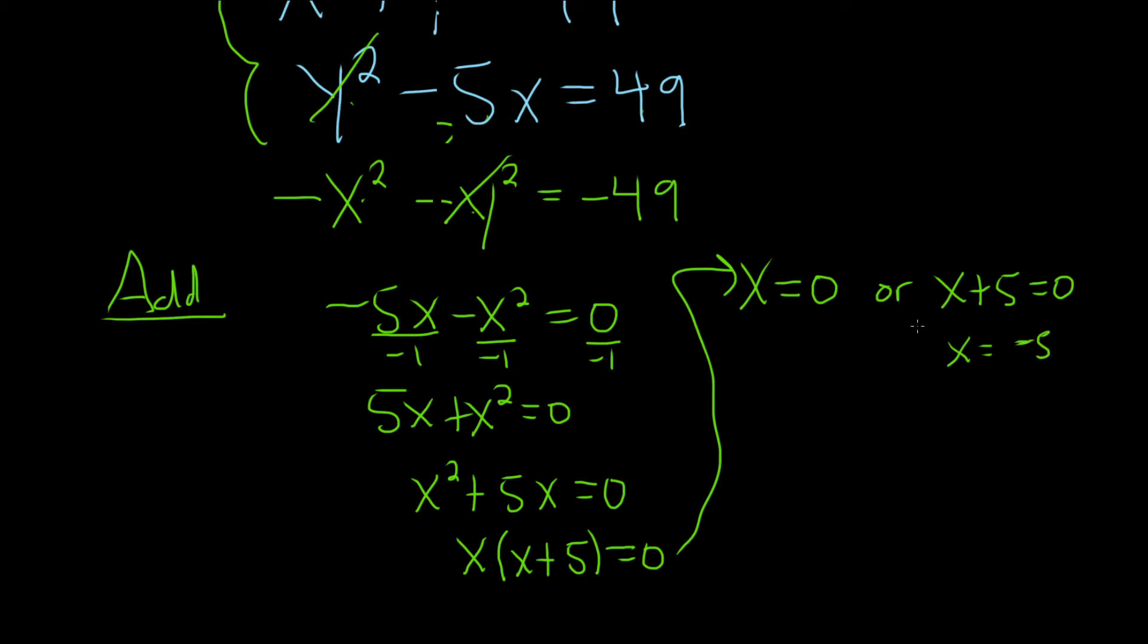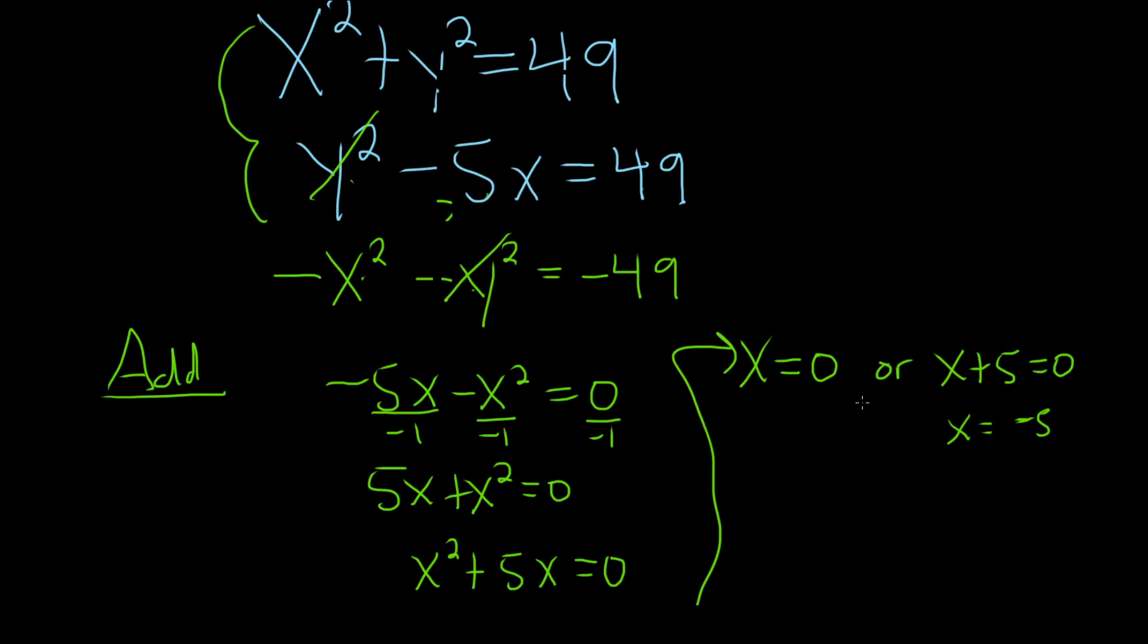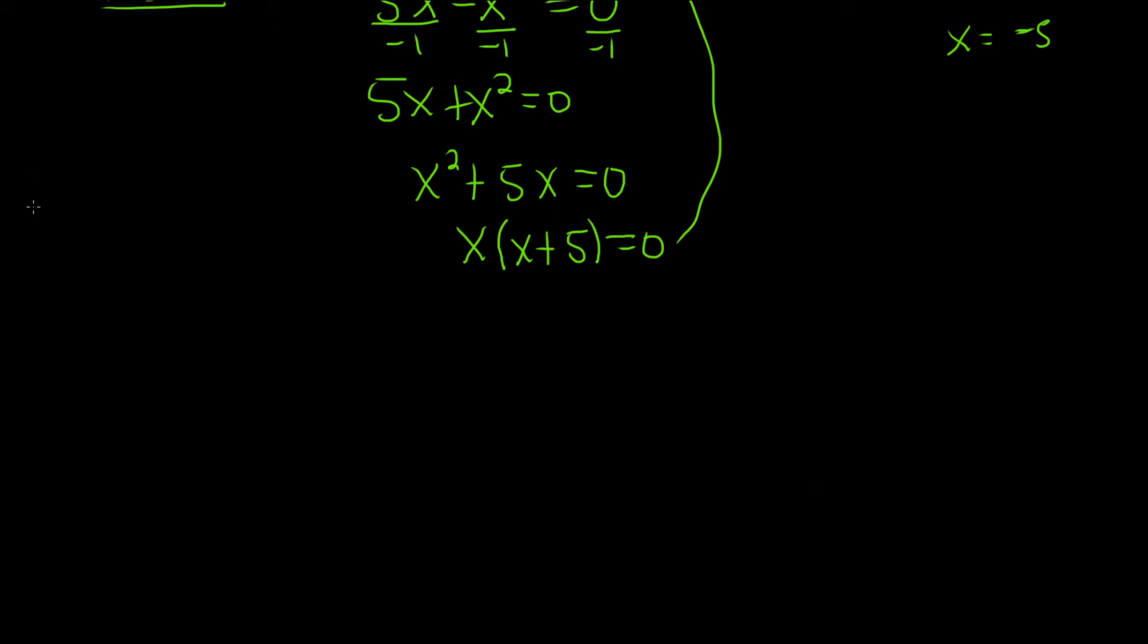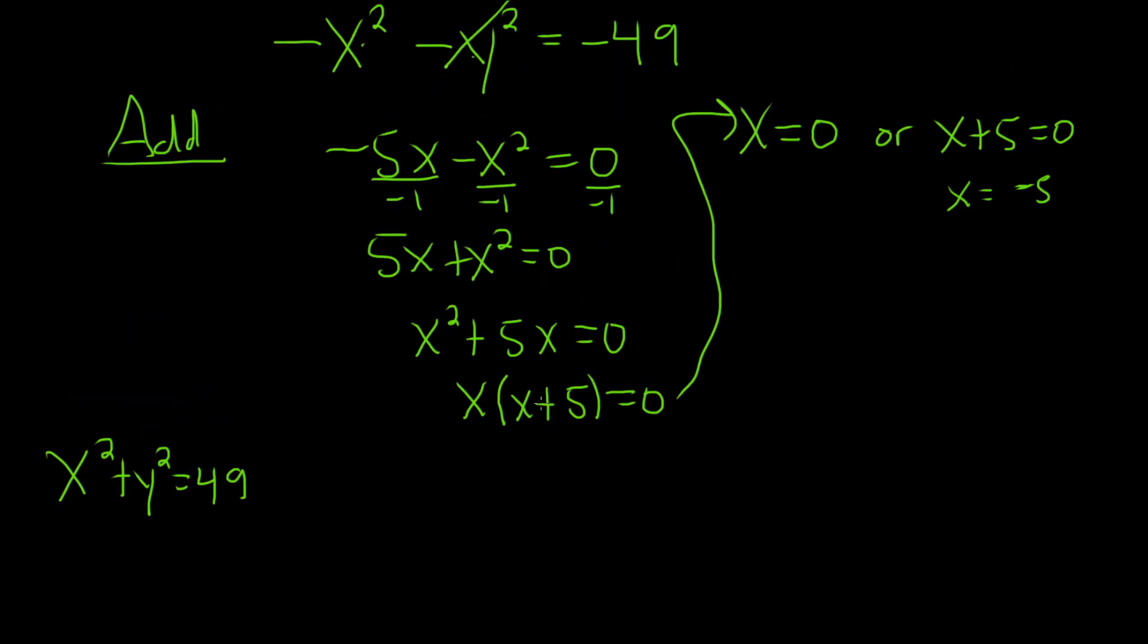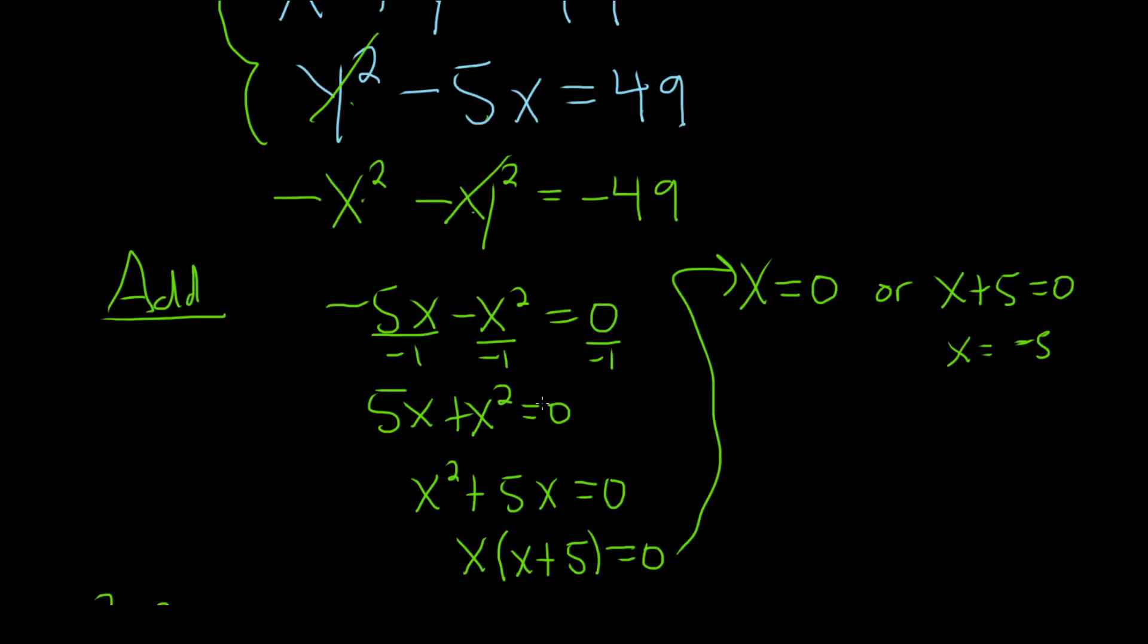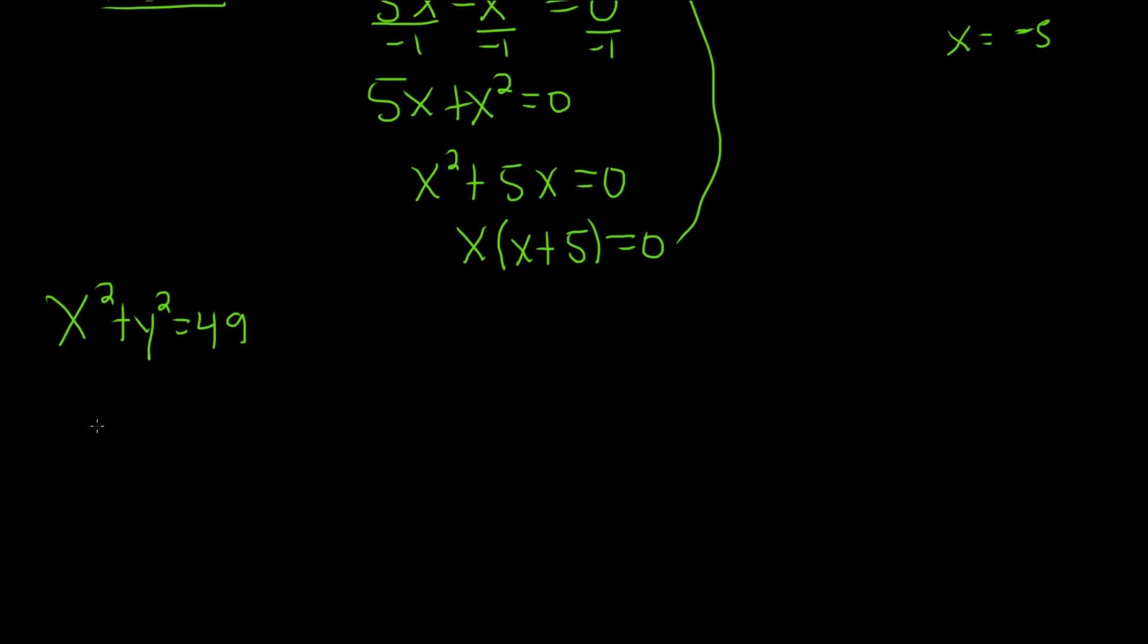So these aren't answers. These are not the answers. These are just x values. The answers to this problem are ordered pairs. So now we have to take these x values and plug them back in to find the y values. I'm going to go ahead and write down the system of equations again. So we had x squared plus y squared equals 49. That was the first equation. And the second one was y squared minus 5x equals 49.